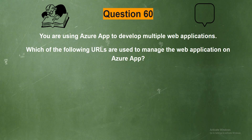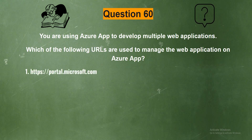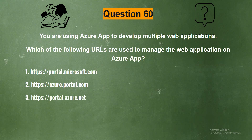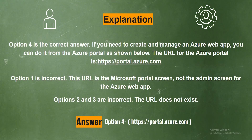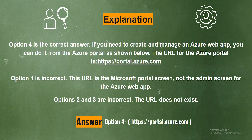Question 60. You are using Azure App to develop multiple web applications. Which of the following URLs are used to manage the web application on Azure App? Option 1: portal.microsoft.com. Option 2: azure.portal.com. Option 3: portal.azure.net. Option 4: portal.azure.com. The correct answer is Option 4, portal.azure.com. Explanation: If you need to create and manage an Azure web app, you can do it from the Azure portal. The URL for the Azure portal is portal.azure.com. Option 1 is incorrect — this URL is the Microsoft portal, not the admin screen for the Azure web app. Options 2 and 3 are incorrect — those URLs do not exist.